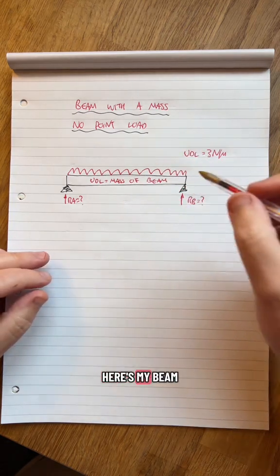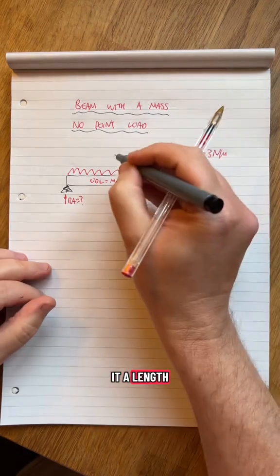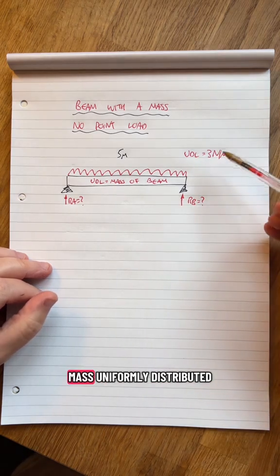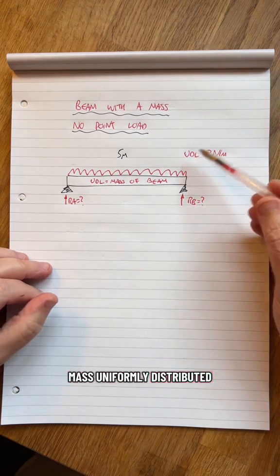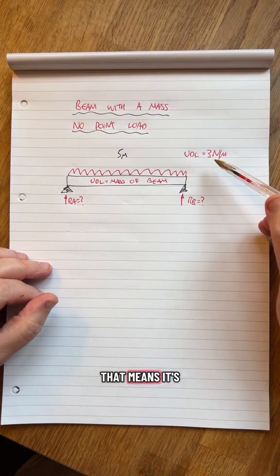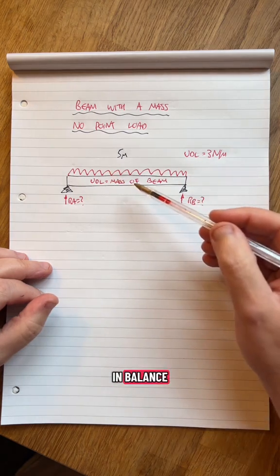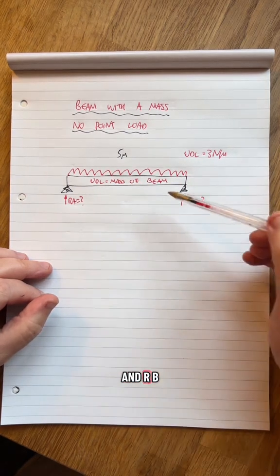Here's my beam. I'm going to give it a length of five meters. It's got a UDL which is equivalent to the mass, uniformly distributed load, of three newtons per meter. That means it's three newtons every meter. This thing's in balance—I'm going to assume it's in balance. We need to find RA and RB.